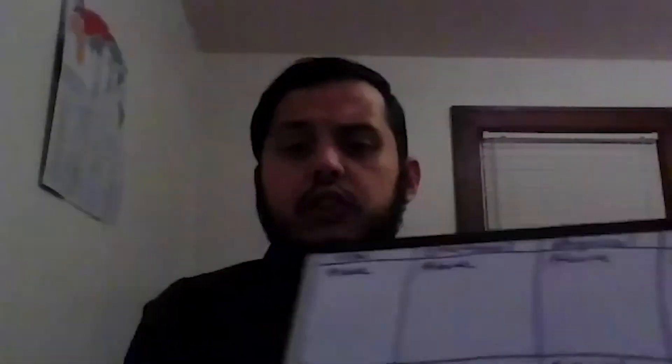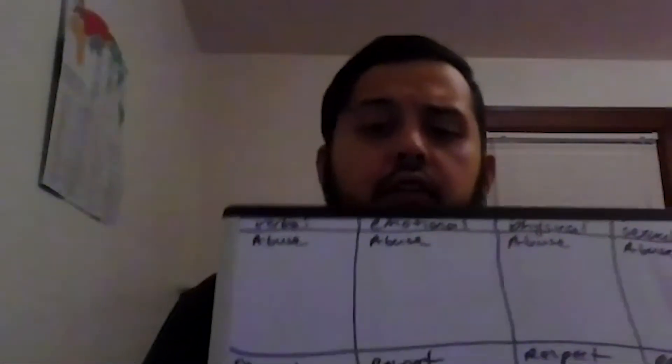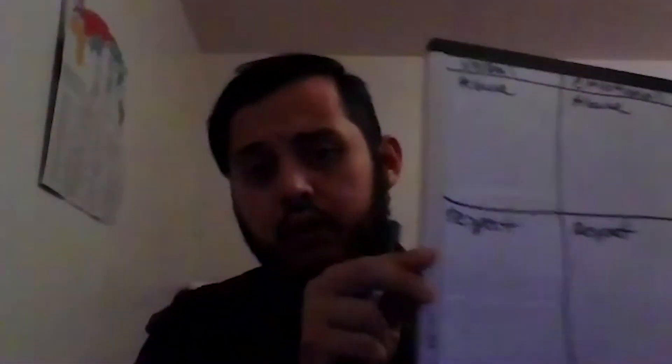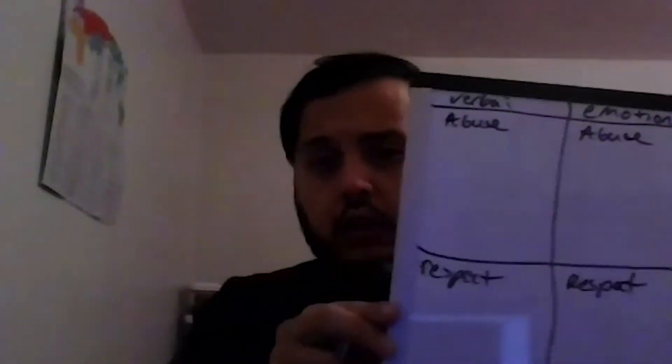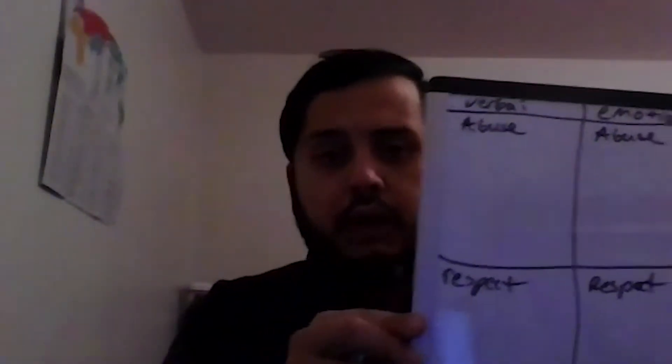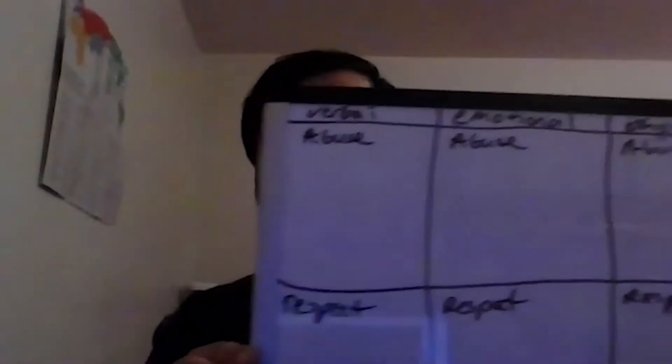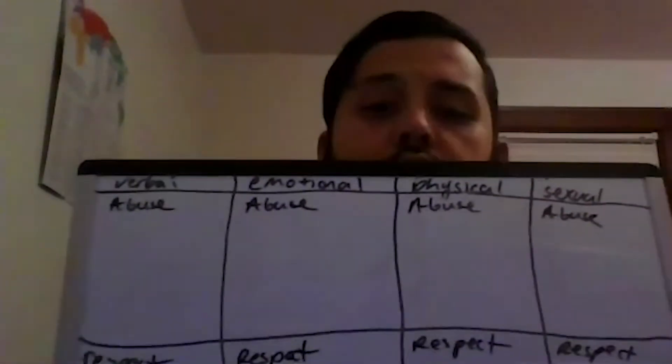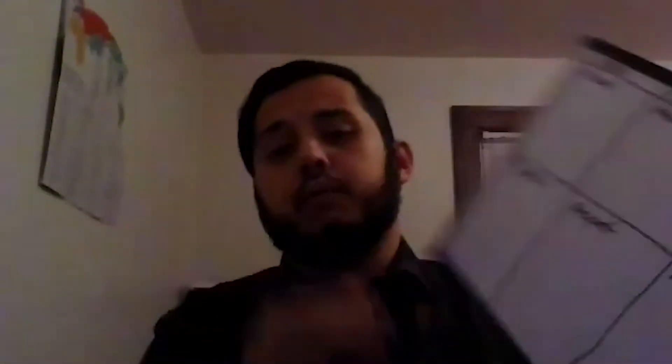The abuse ends up being easier to fill in. We're going to do some of these right now. What I have here is a whiteboard to show you what I'm talking about. We have verbal abuse and respect, emotional abuse and respect, physical abuse and respect, and sexual abuse and respect. You just start writing examples.